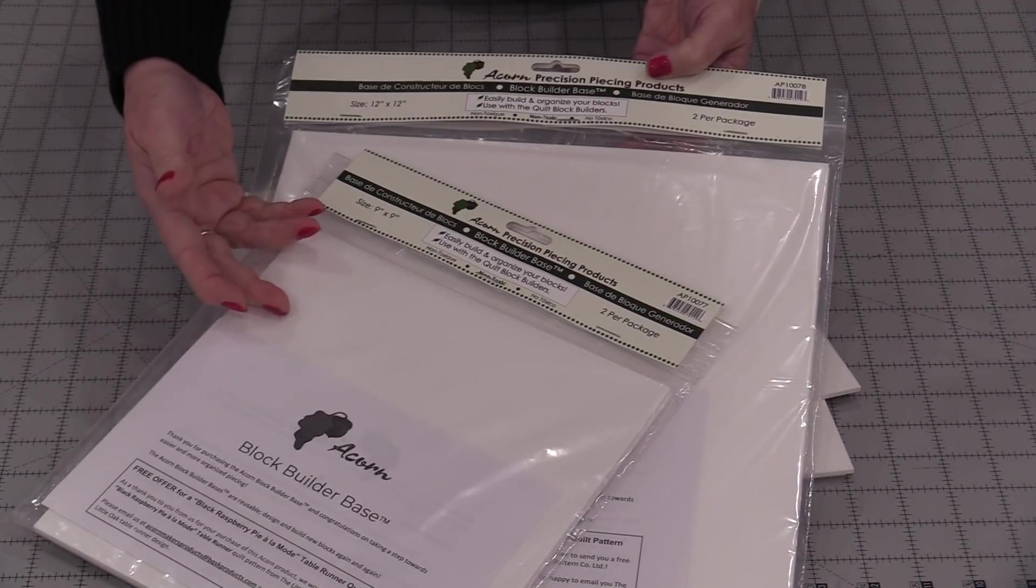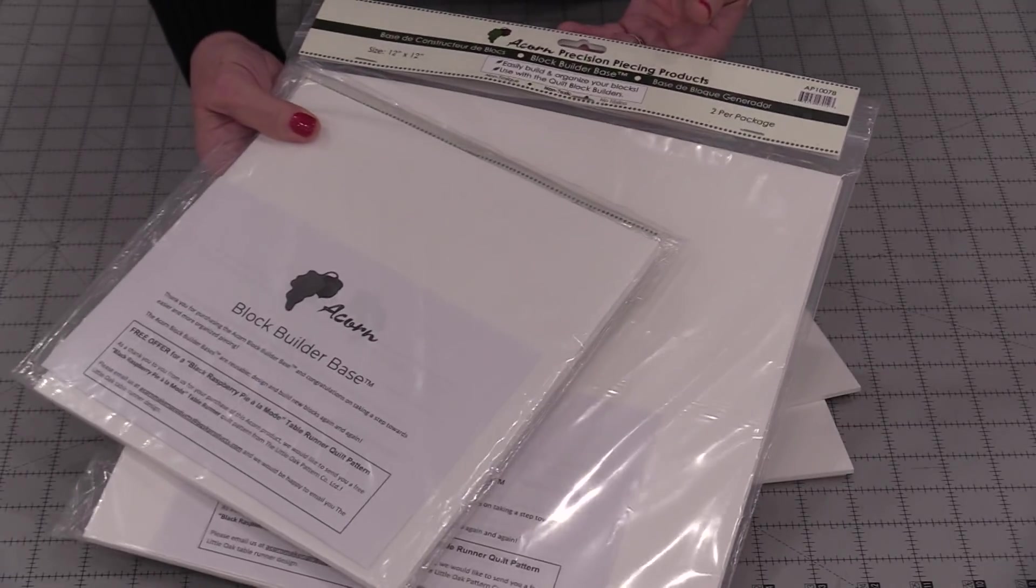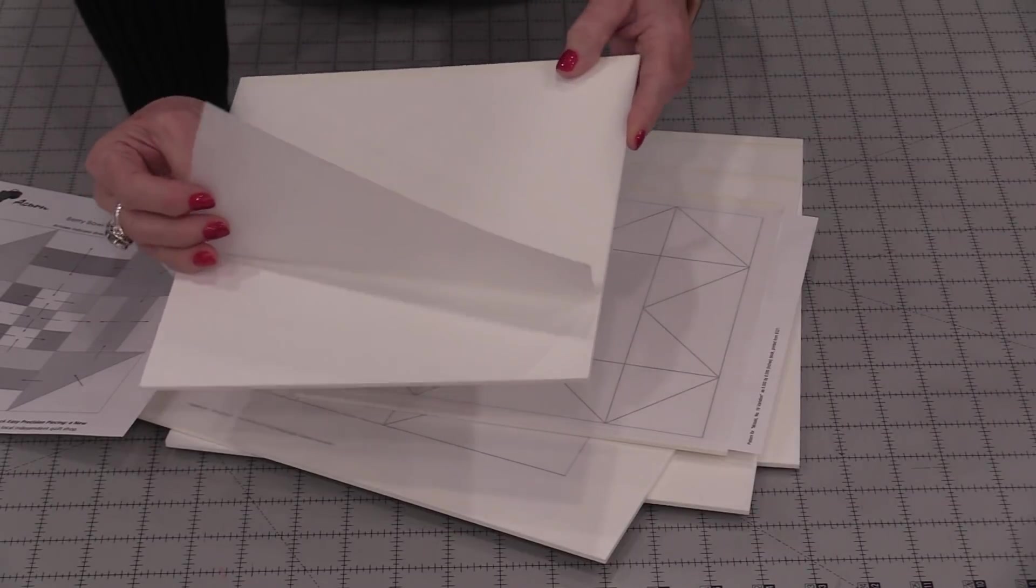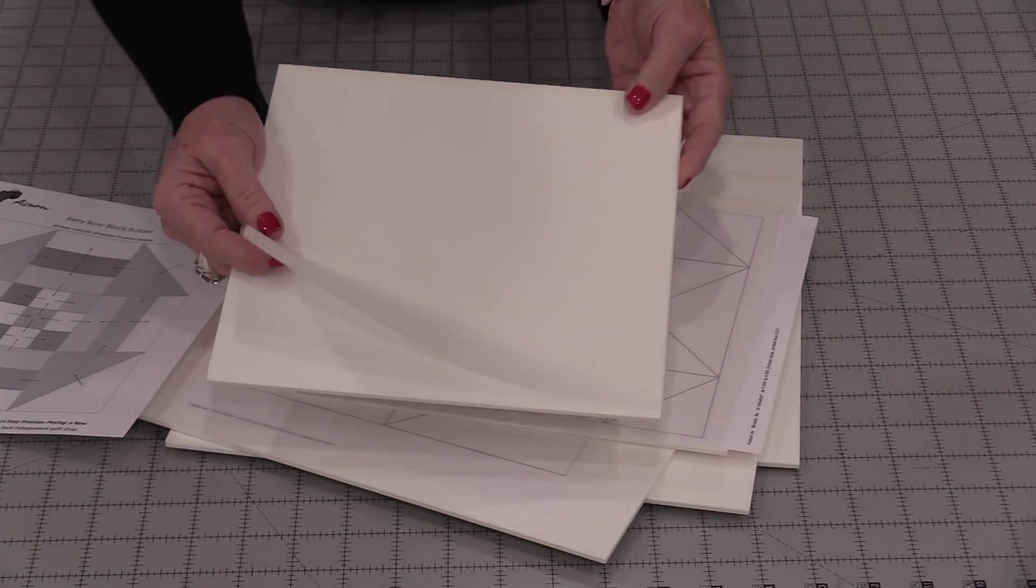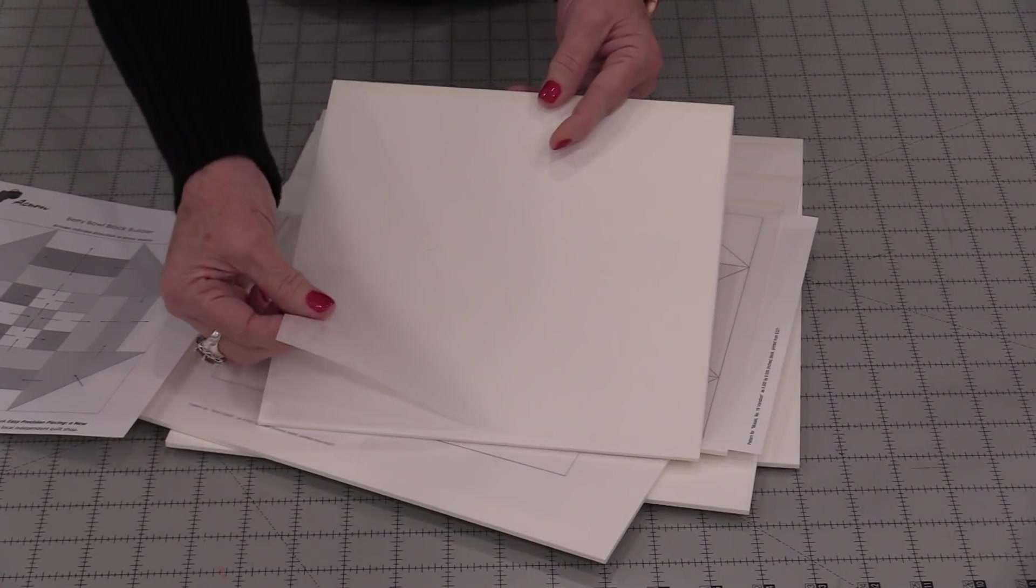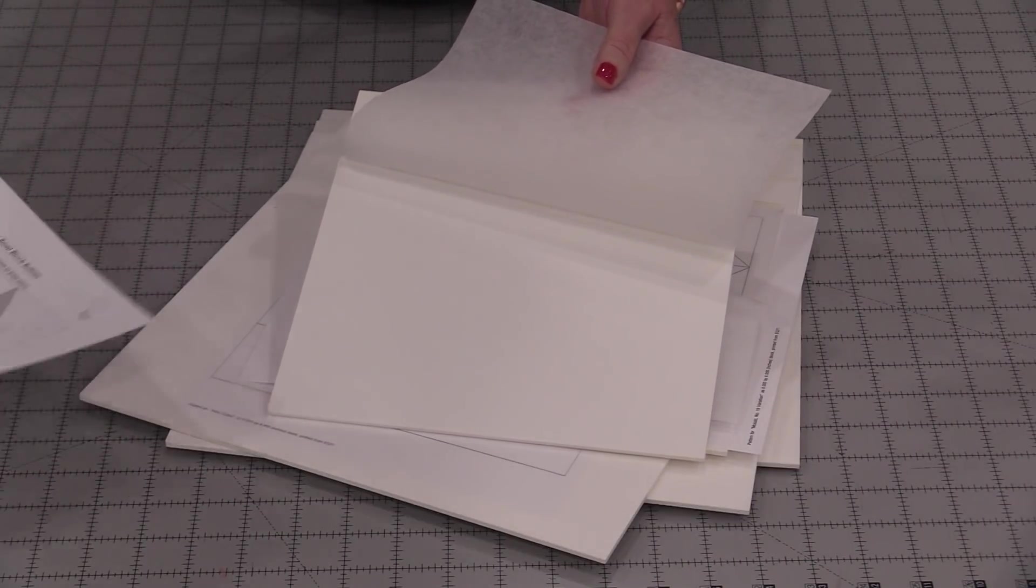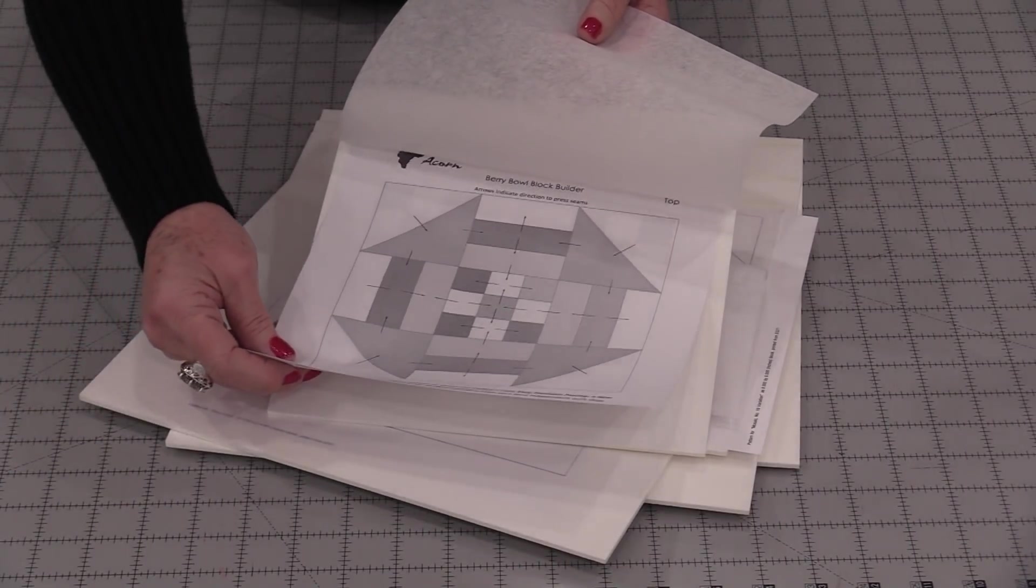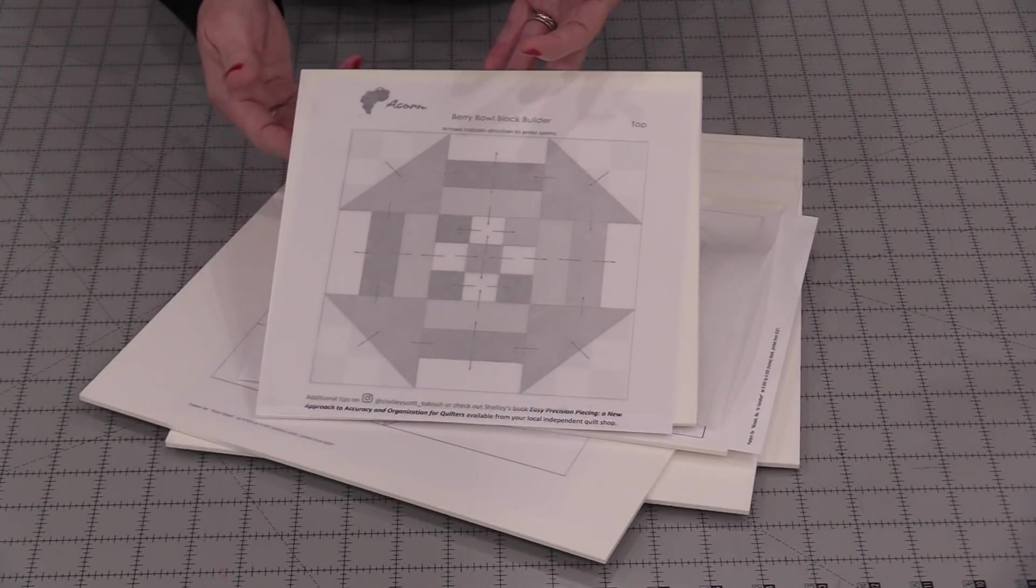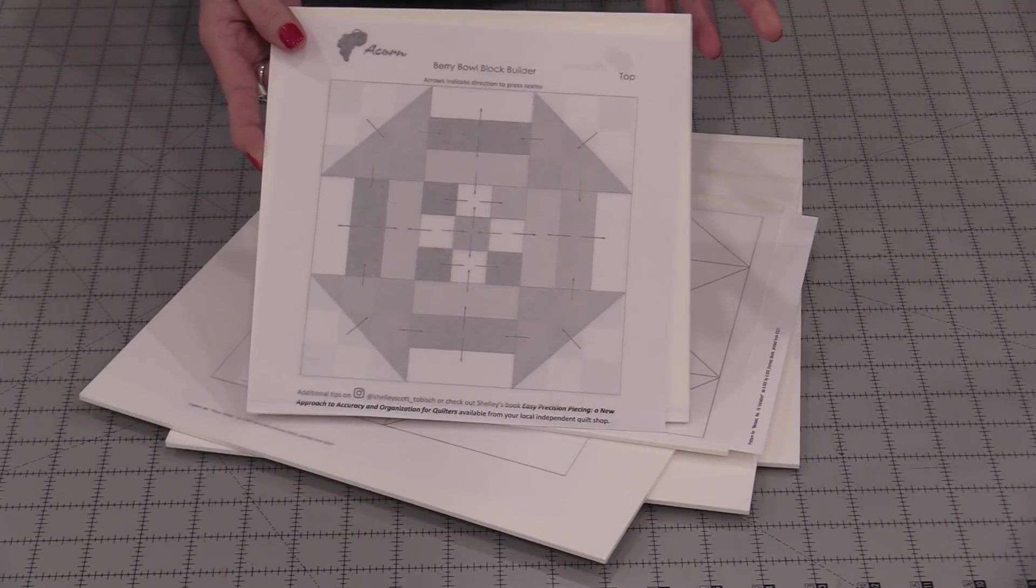We can get two different sizes, a 9x9 and a 12x12. They come two in a pack. The block builder base is a lightweight yet sturdy base that we're going to be able to use to transport our fabric and help organize our fabric. We have this little soft piece of fabric that fits on top so we're able to take the pattern layout of the block that we're going to use and put it in between the layers. We can see the pattern and we're going to be able to use these to help keep us organized.